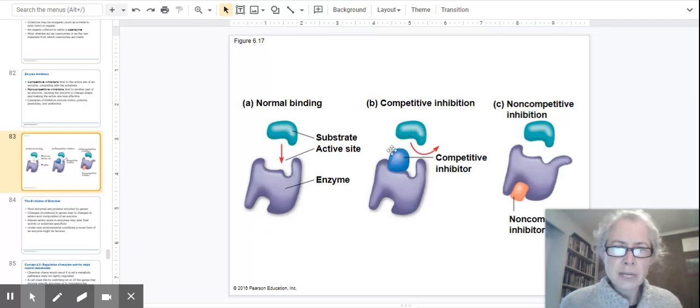This is called competitive inhibition because the substrate is competing with this little inhibitor for access to the active site. That's one form of inhibition of enzymes.